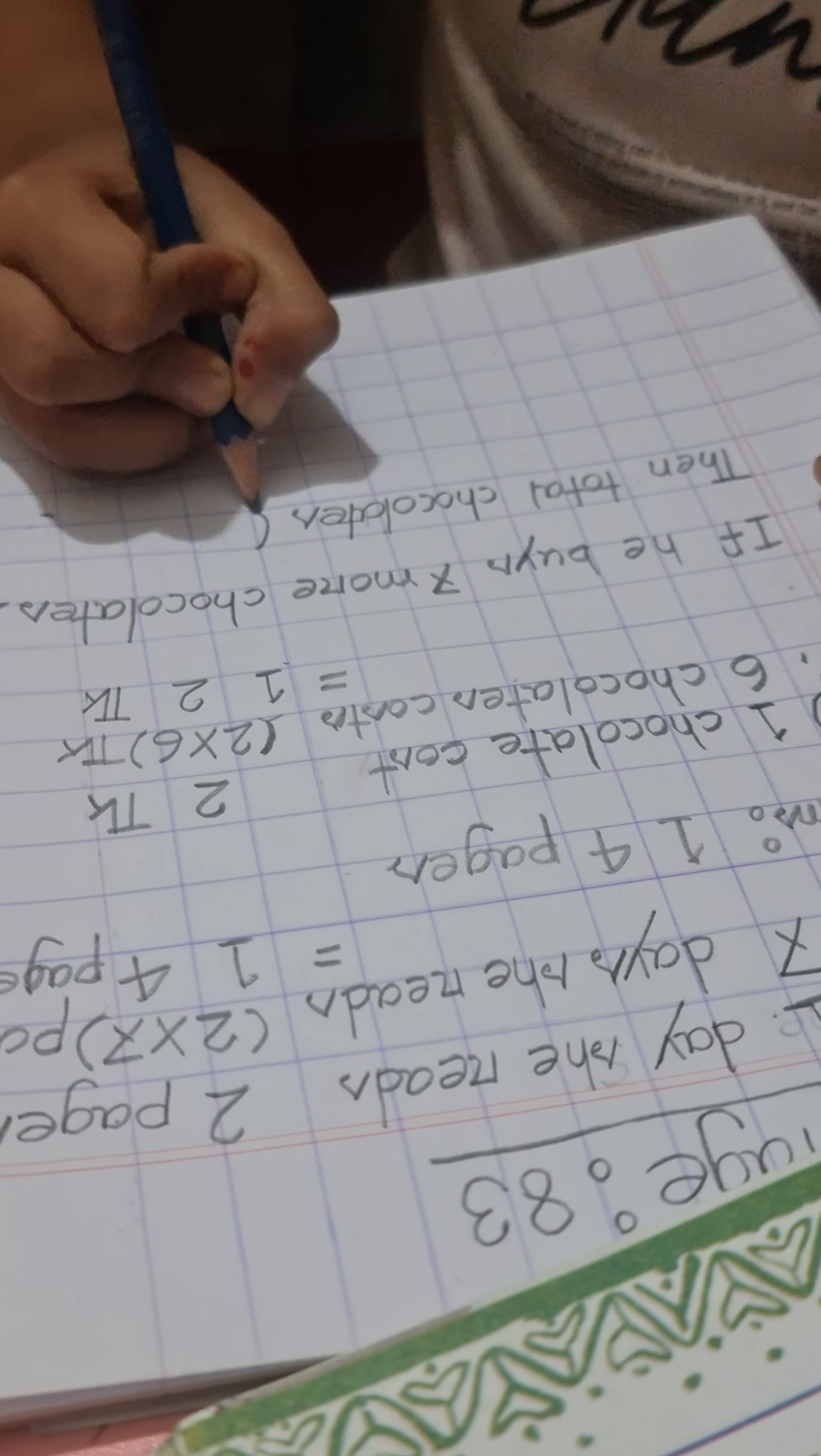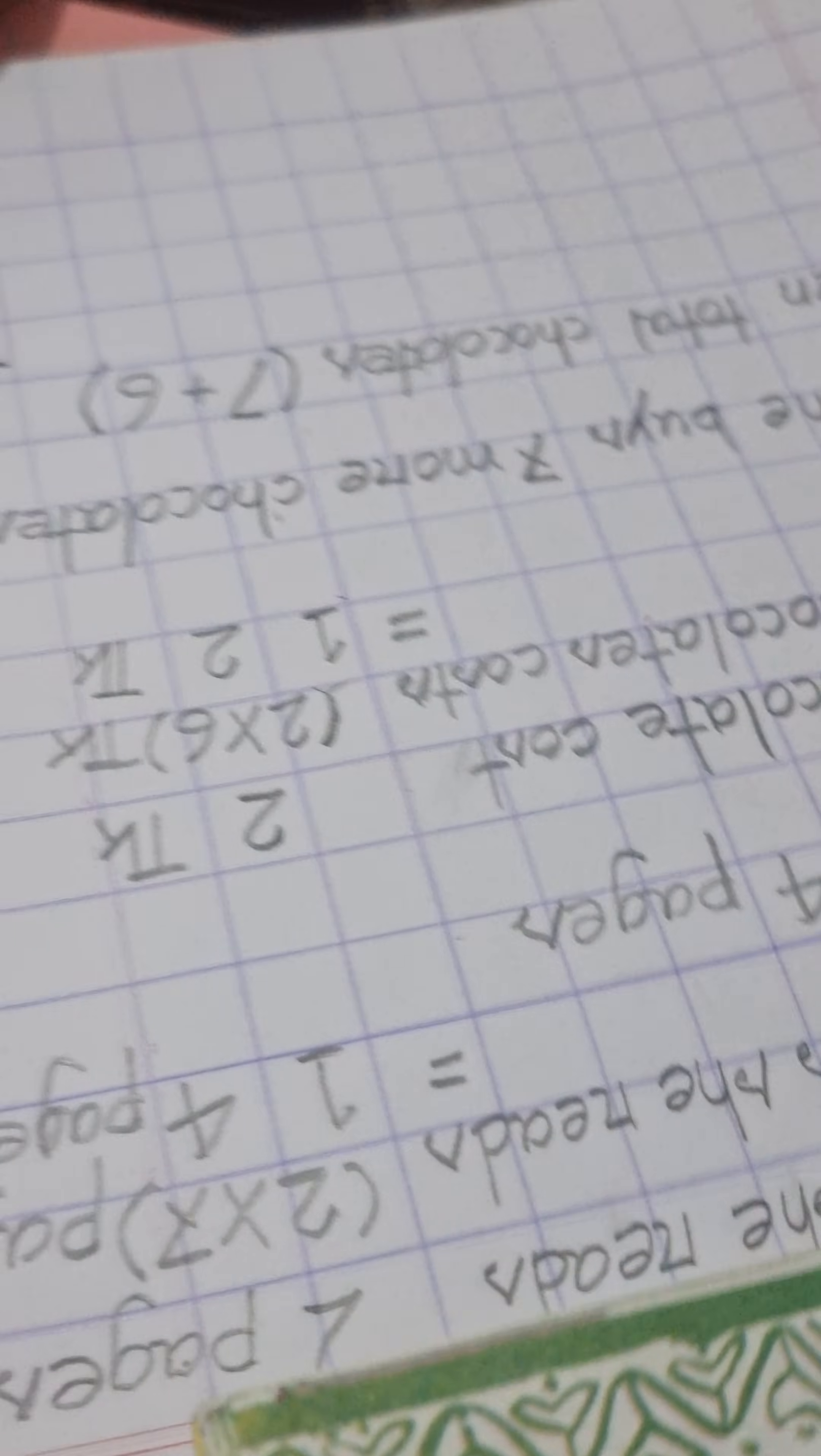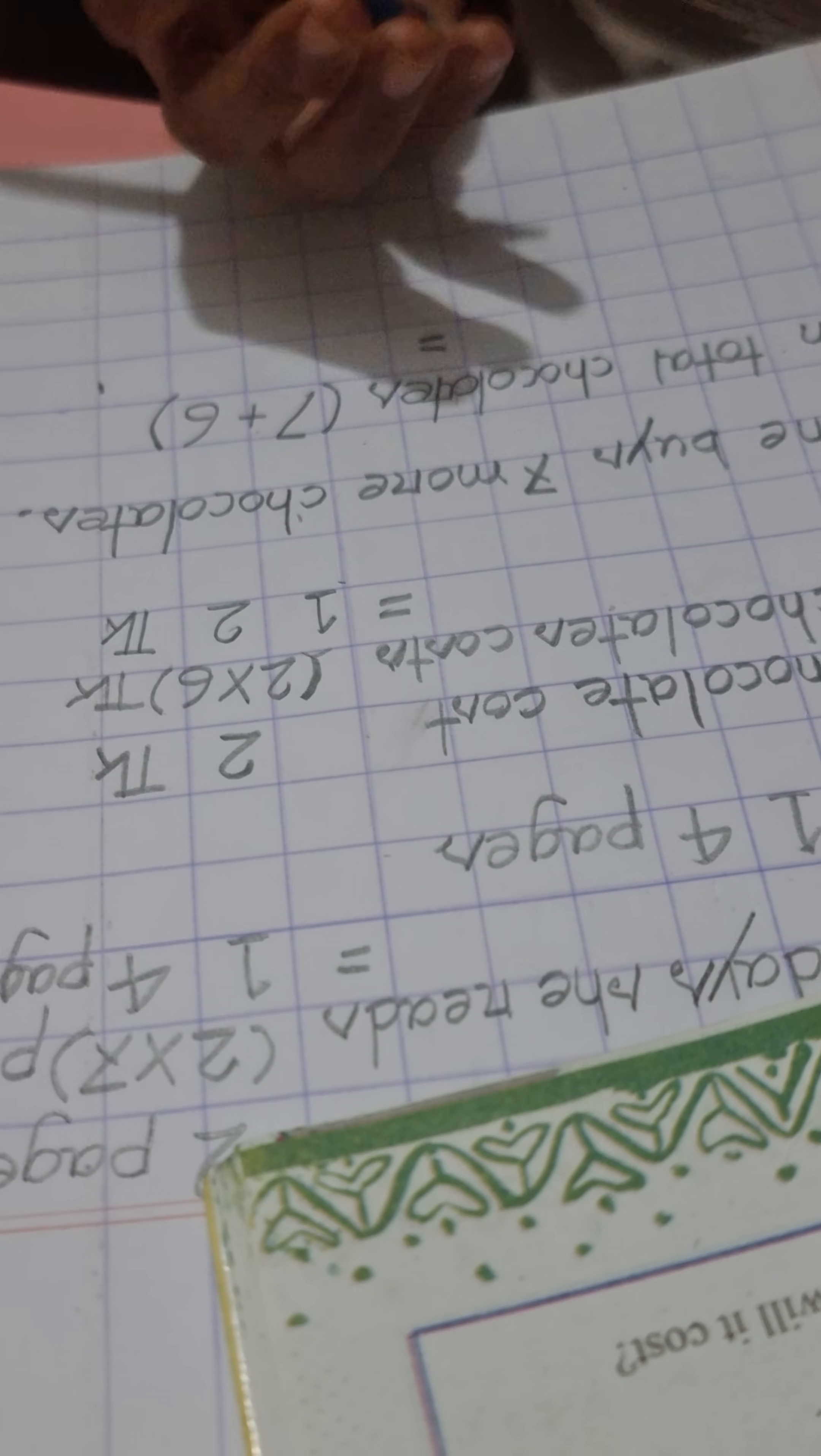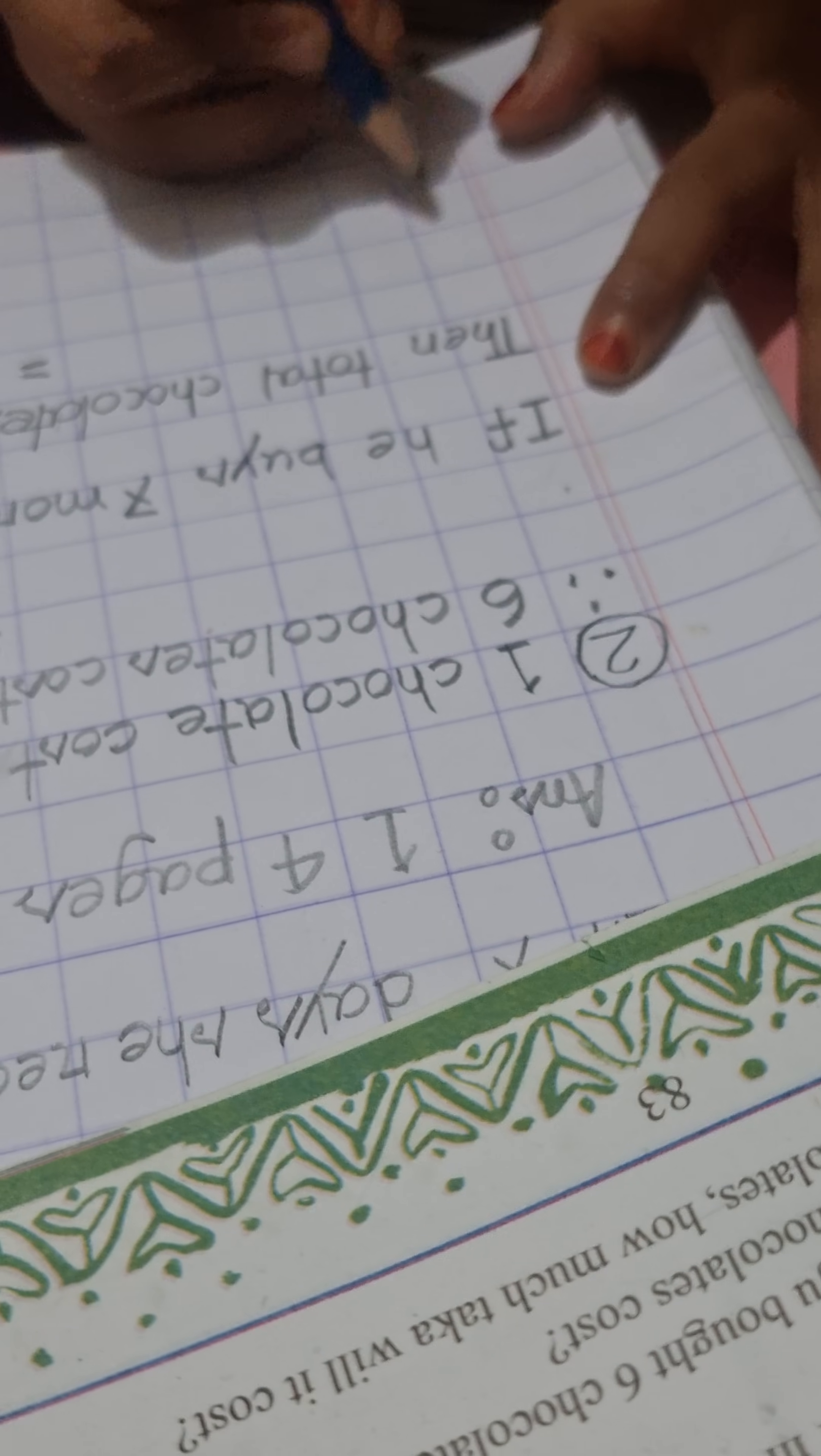Now, seven plus six. So there is seven and six, we get addition. Seven plus six. Now equal to... This is thirteen. Equal to thirteen.